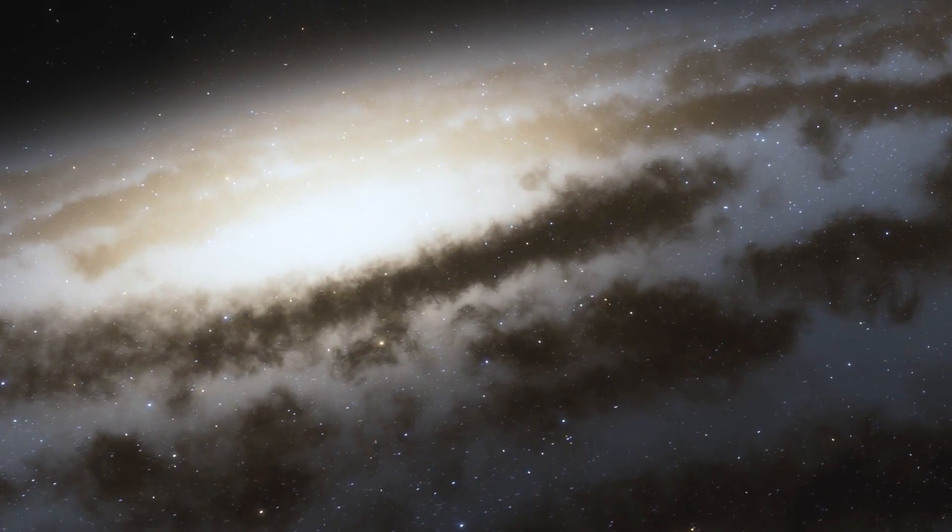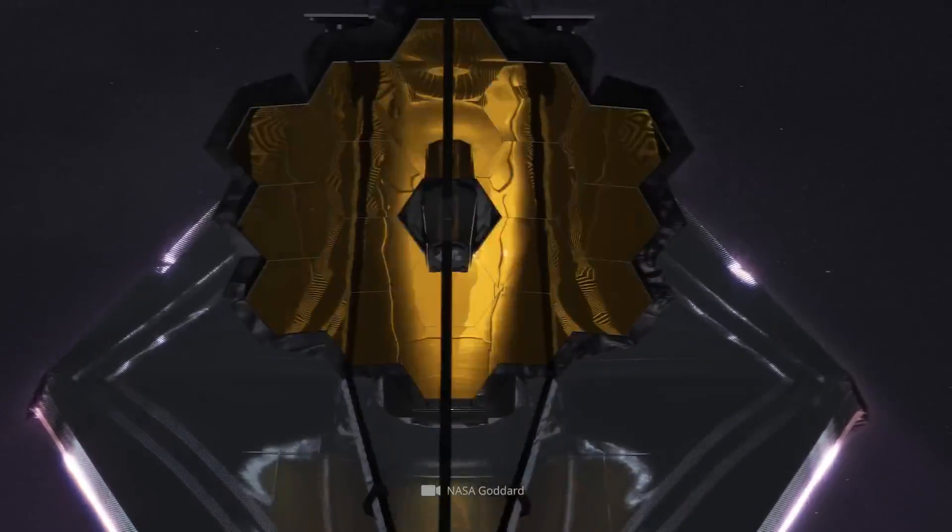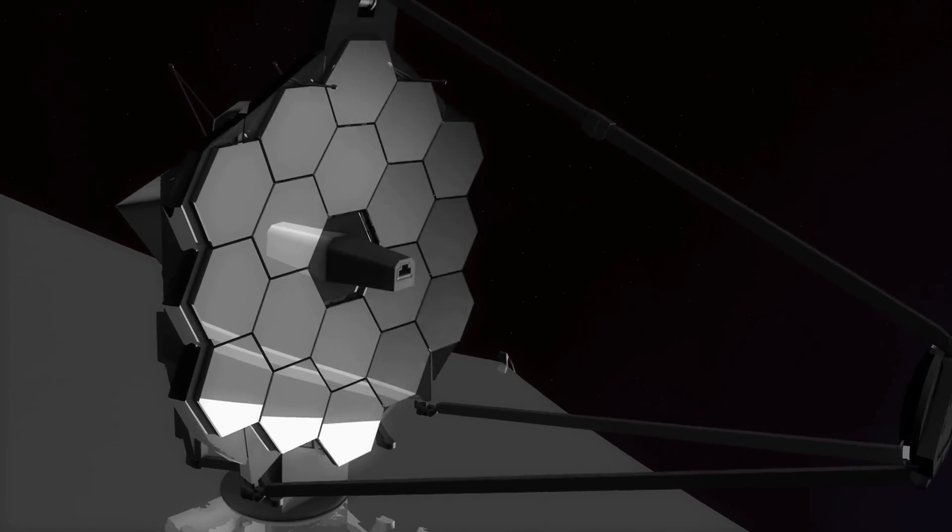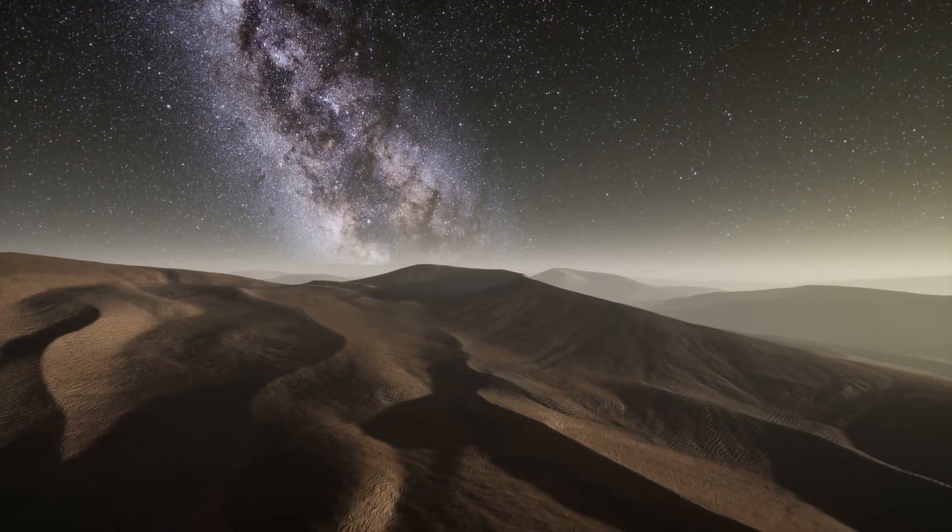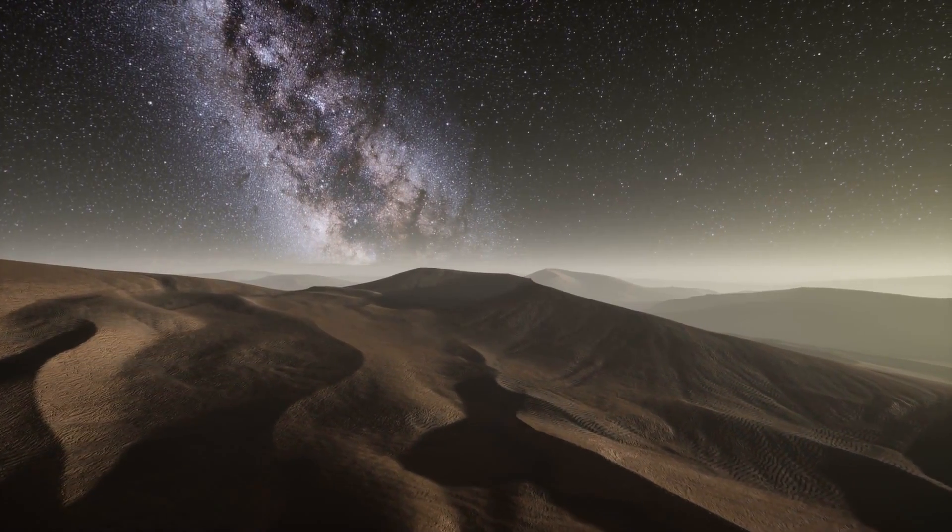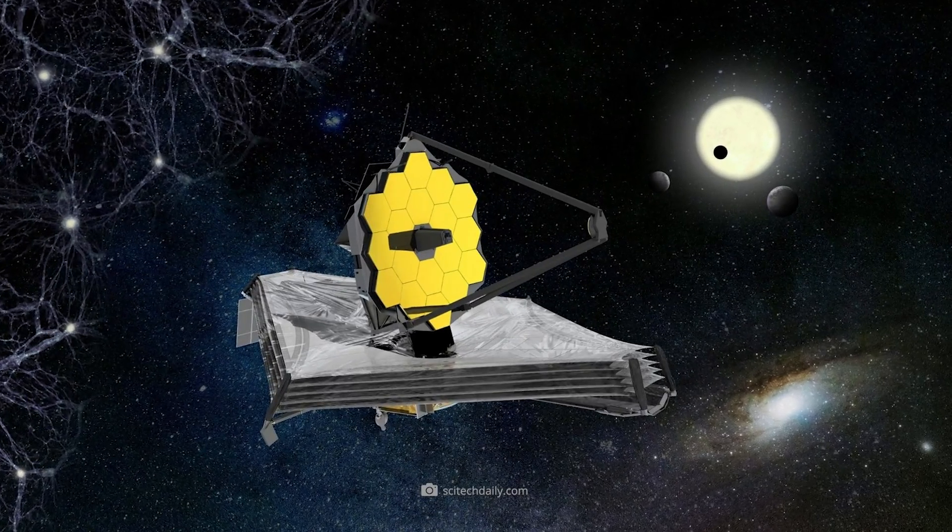But even before the ambitious mission has really gotten rolling, the project is already facing an unexpected complication. The space telescope has been hit by a small body. Find out what's behind this collision and what breathtaking insights the very first Webb images give us in today's video.